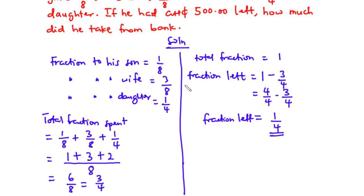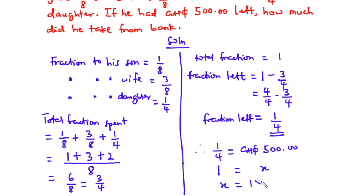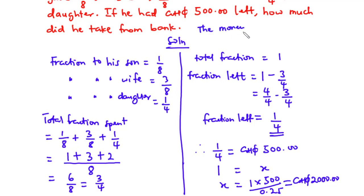The fraction left represents the amount of money that was left after he shared parts of the money to his family. We need to find the amount he took from the bank. So if one quarter, which represents the fraction left, is equal to 500 Ghana cedis, then the total fraction is equal to x. Therefore x equals one times 500 divided by one over four, which is the same as 0.25. So 500 divided by 0.25 equals 2,000 Ghana cedis. That is the amount of money he took from the bank.